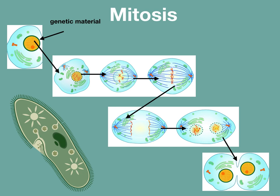Mitosis is very similar. In single-celled eukaryotes — these are organisms with a nucleus — they have a form of binary fission called mitosis. Like binary fission, mitosis involves the copying of the genetic material and the splitting of the cell. However, it also includes the splitting of the nucleus.